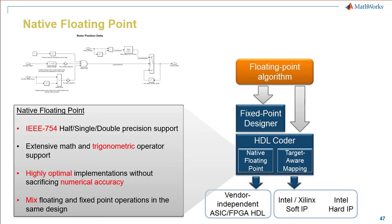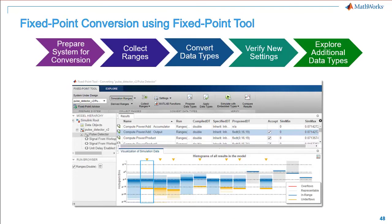To generate hardware-efficient HDL code from Simulink, we require the data types to be fixed point. Fixed point data types are used in order to reduce power consumption and hardware resource usage. For initial prototyping and validation of control algorithm design, we can use floating point data type and generate HDL code. HDL Coder can generate HDL from native floating point data type. This capability was awarded the Embedded Award in 2017 for its ability to generate optimal code without sacrificing numerical accuracy. When the project moves to production, it is recommended that data types be converted to fixed point.